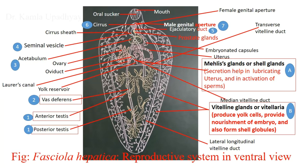The cirrus opens to outside via the male genital aperture, which opens to a common gonopore shared with the female genital aperture. The female reproductive organ has a single highly branched ovary connected to a tube called Laurer's canal. Beyond this is the highly convoluted uterus, which opens to outside through the female genital aperture and the common gonopore.